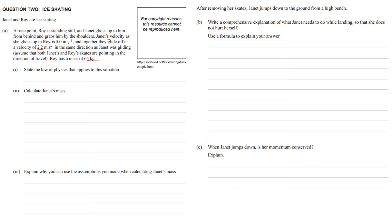So the first thing they ask us to do is state the law of physics that applies to this situation. Of course, this is the law that the total momentum beforehand equals the total momentum afterwards. So whatever the momentum of Roy and Janet before equals the momentum of Roy and Janet afterwards. That's an achieved question.